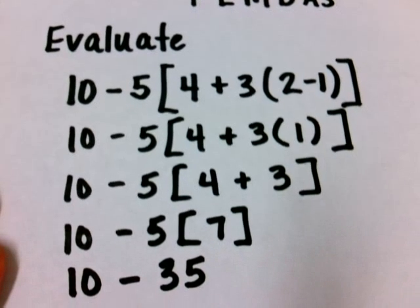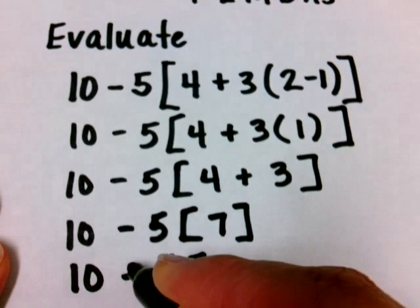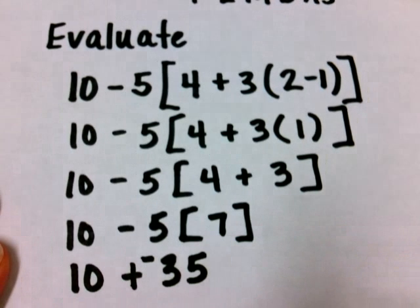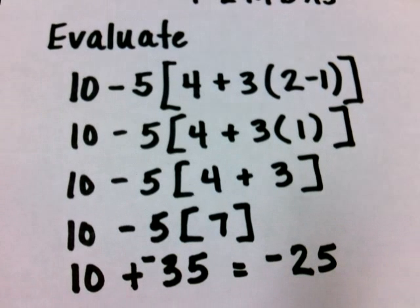And our final step is to subtract. 10 minus 35. You might think of that as 10 plus negative 35, and that would give me negative 25 as my final answer.